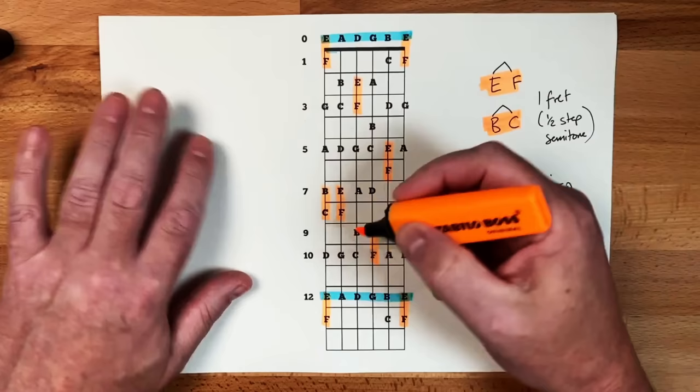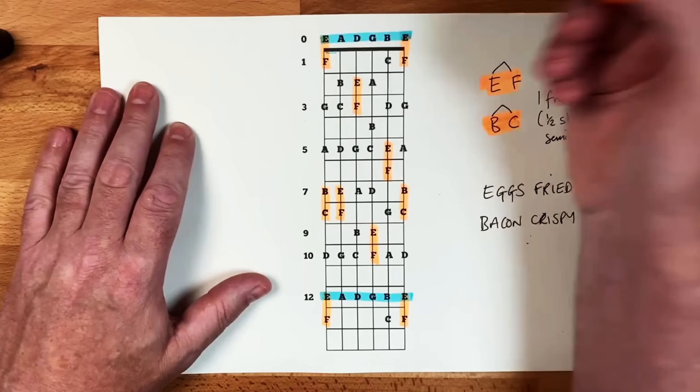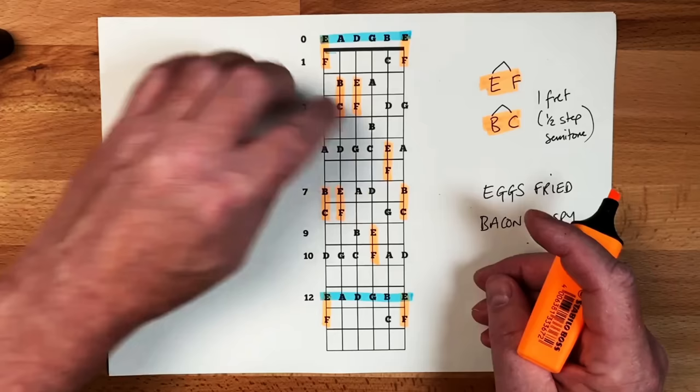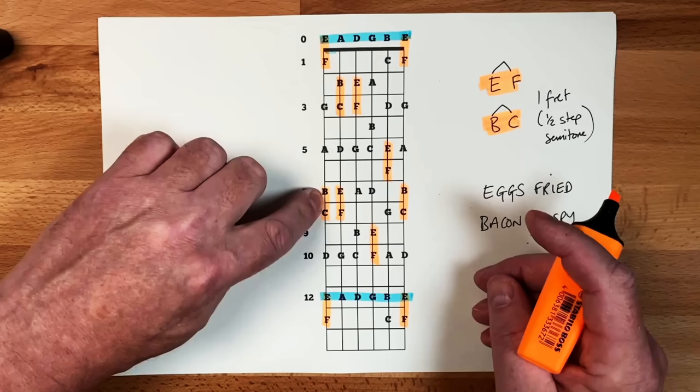We've already done it on the E strings. So we've done it on the thick E string. We've done it on the thin E string. Let's do it on the A string. This is an easy one to find because it just goes A, B, C. So A, B, C there. And you can see you get both of these on each string. There's an E and F and a B and C on the E string. On the A string here, you can see there's a B and a C and an E and an F.